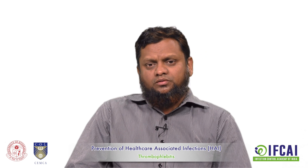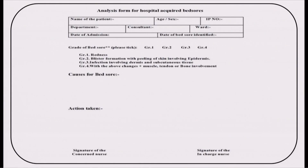The bed sores analysis form follows the Push scale or Braden scale, with grades divided into Grade 1 through Grade 4 — based on redness, blister formation, infection involving the skin and subcutaneous tissue, and deeper involvement of organs. This proforma allows you to record and classify bed sores based on grading from either the Push scale or Braden scale.